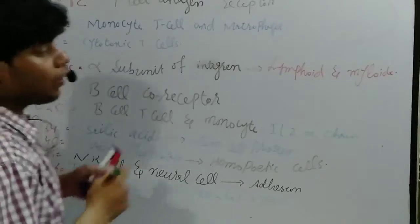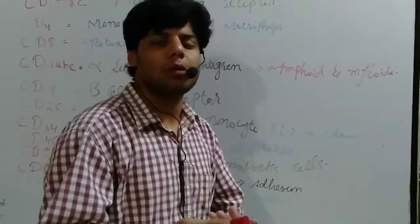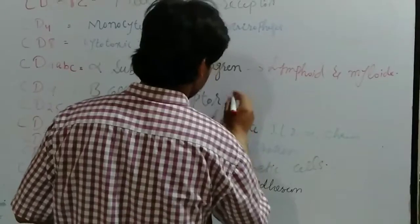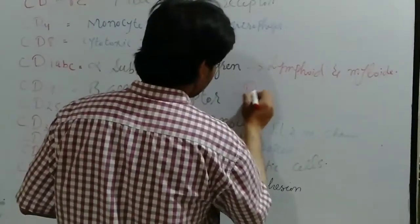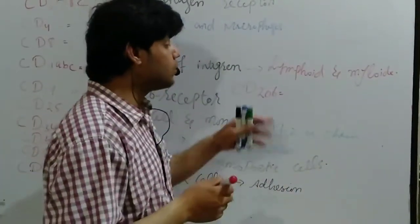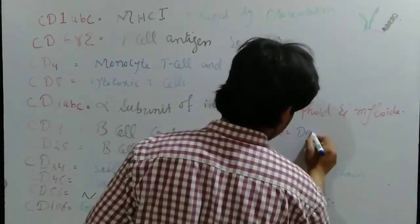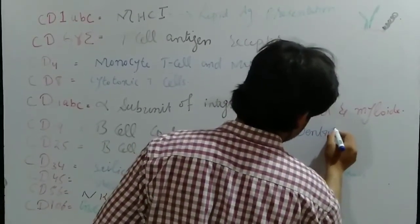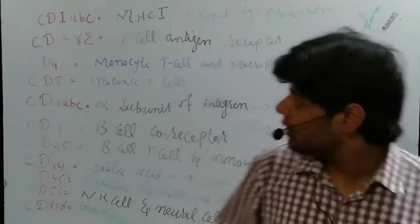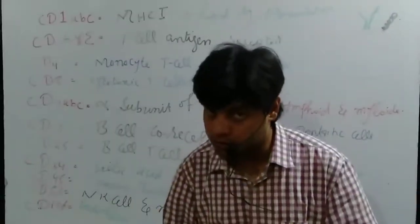Last, we have CD206. Although there are some other CD molecules, these are the main important and common ones. CD206 is usually present on dendritic cells. So these are all the CD molecules we have covered.